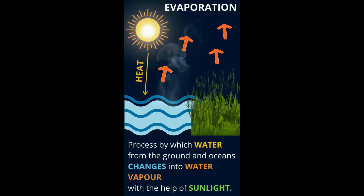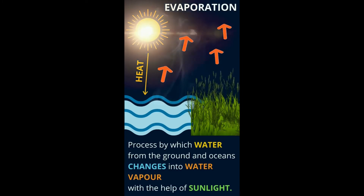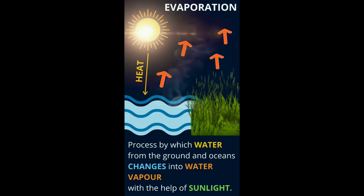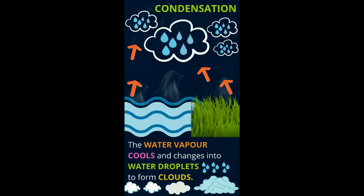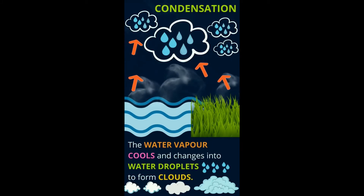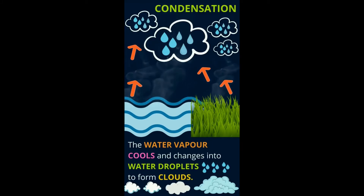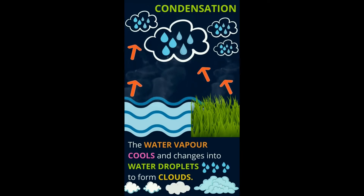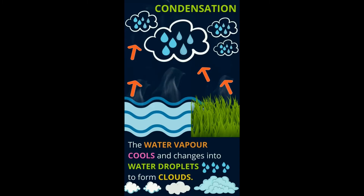And what is helping this process? The heat from the sun — the bright sunlight. We learnt what evaporation is. Liquid water changes into water vapor with the help of sunlight.